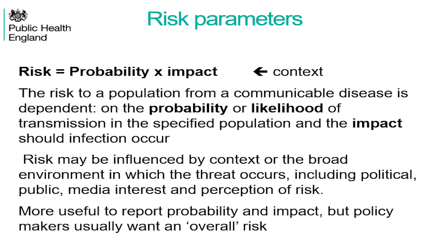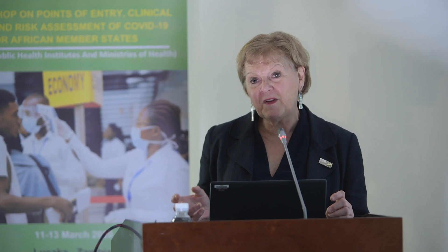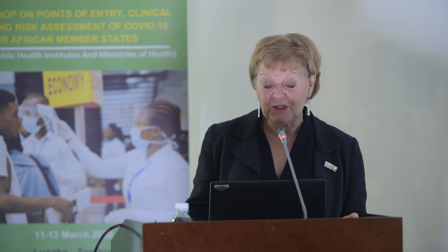Risk is probability times impact. The risk to a population from a communicable disease is the probability of it happening in a specified population, and the impact should that actually occur. I put context there — this is all the stuff that surrounds it, because we don't just deal with those parameters alone. We've got all the politics, the media, the public attention, and all the issues we're dealing with in COVID at the moment.